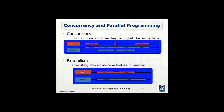We talked about a few examples and introduced the concept of data parallelism and task parallelism. Next we're going to look at two important concepts: concurrency and parallelism. Concurrency is where we have two or more activities happening at the same time. In this example we have two threads — the concept here is that we have two or more activities happening at the same time, and these can be on different processors.